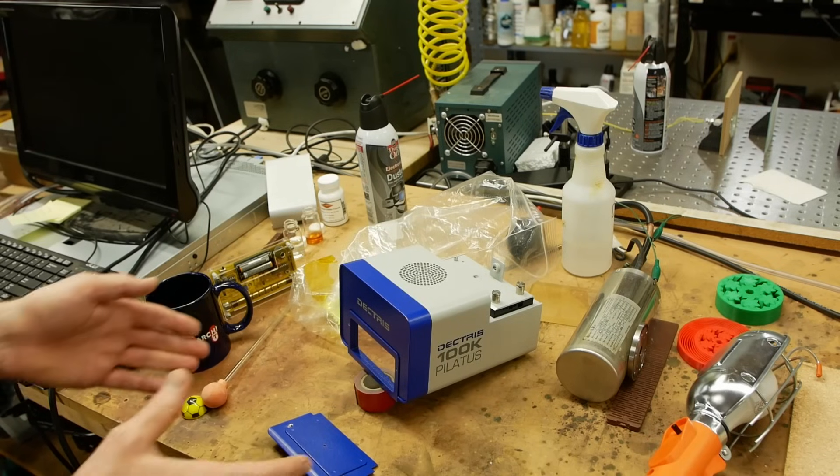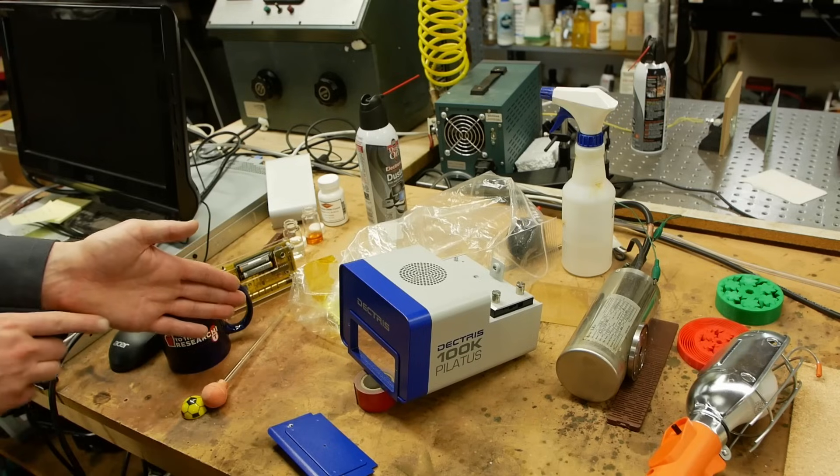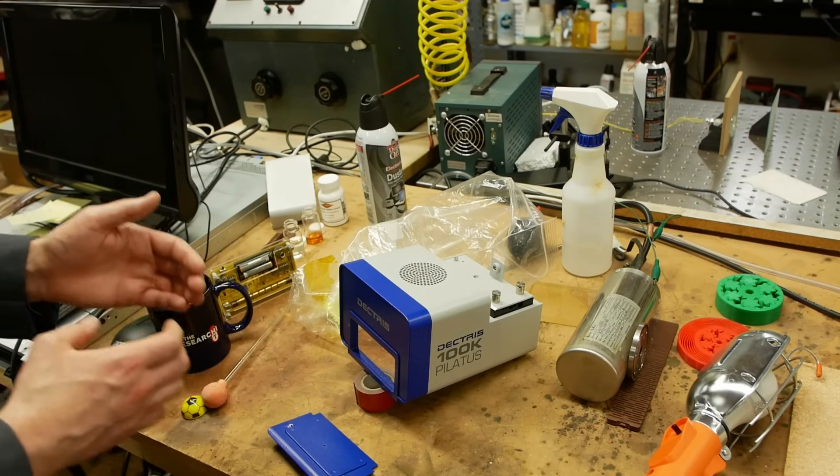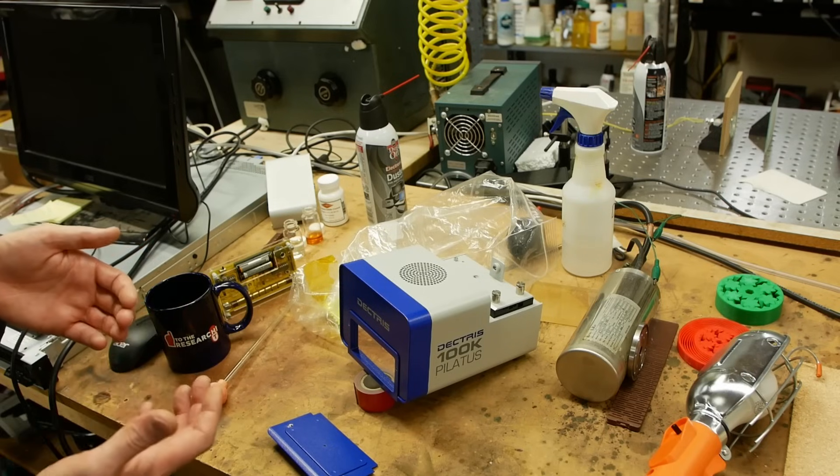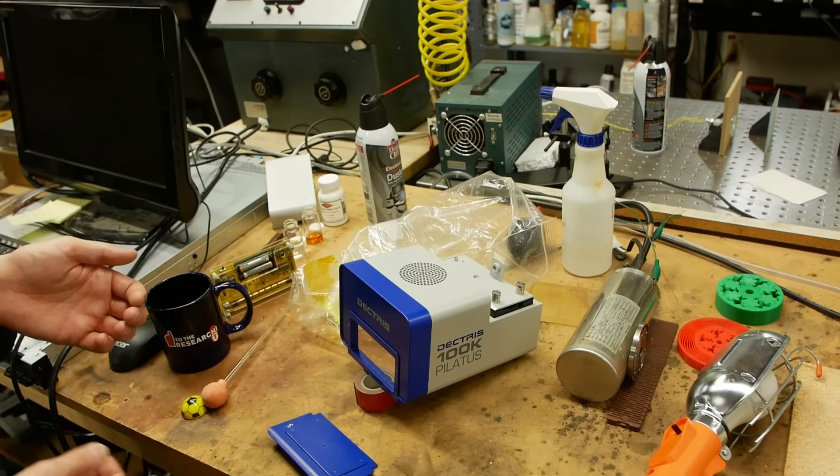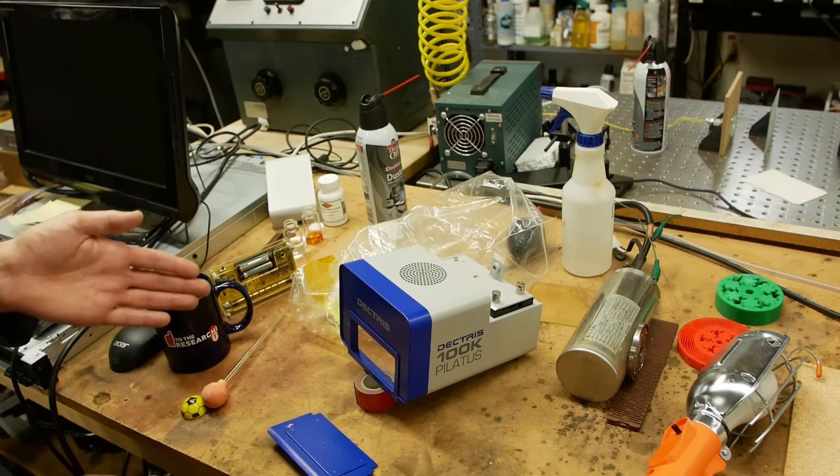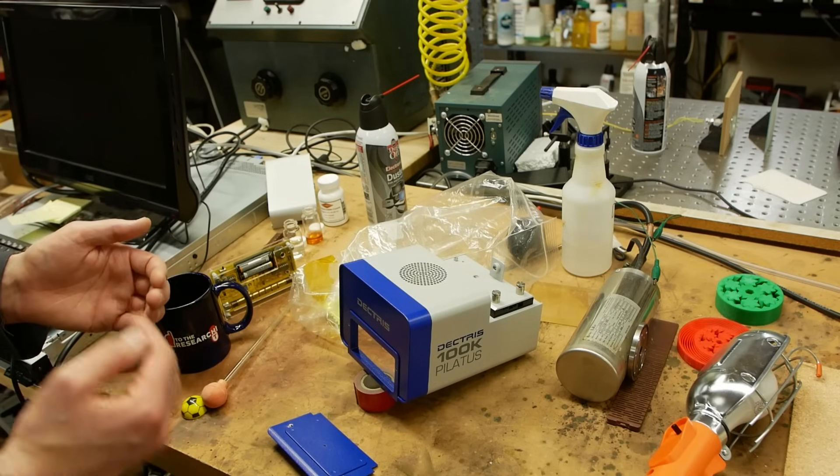So the way this works is it's a direct conversion sensor. So when an x-ray photon goes in, there's a semiconductor that's specially tuned to catch x-ray photons between 5 and 30 kilo electron volts. And when the photon goes in, there's a chance that it is instantly converted into a digital pulse. So it just counts photons.